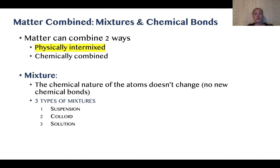Matter can be combined in two different ways: either physically intermixed as a mixture, of which there are three types — suspensions, colloids, and solutions — or matter can be chemically combined, in which case we're forming and making new bonds. When we physically intermix and just form a mixture, we're not making new bonds.